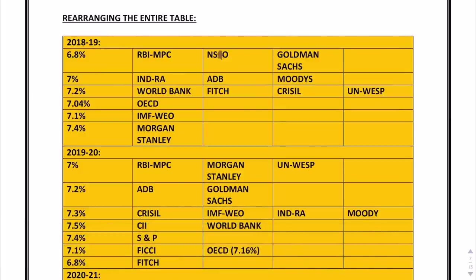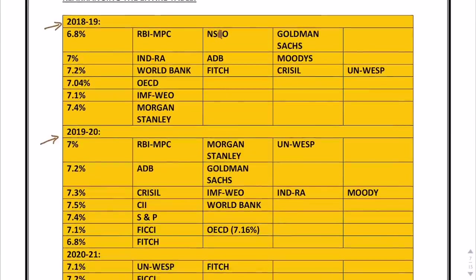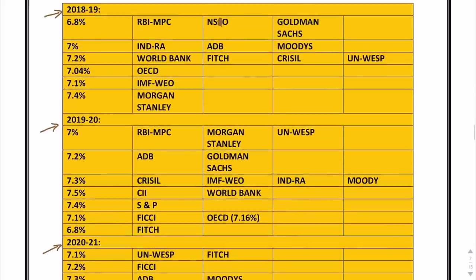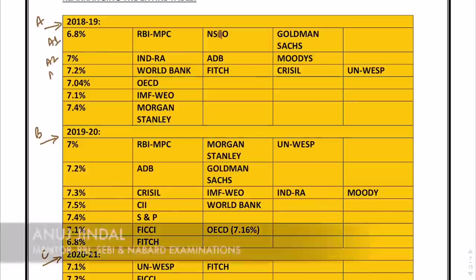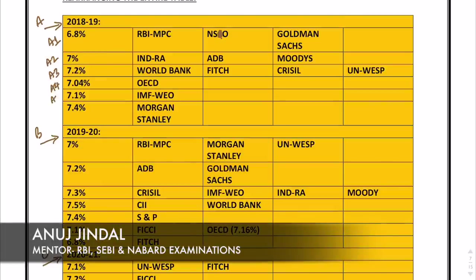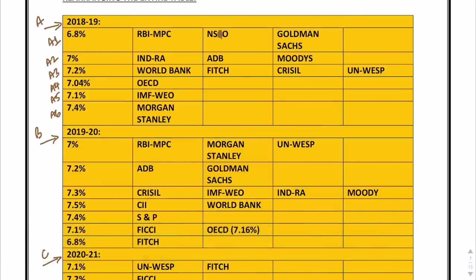A rearrangement of the entire table has been made. I have divided the table into three major parts: 2018-19, 2019-20, and 2020-21, and each part has been further divided into sub-sections — let's call them A1, A2, A3, A4, A5, A6 and so on. These sub-parts represent the percentages — the forecasts made by different organizations.